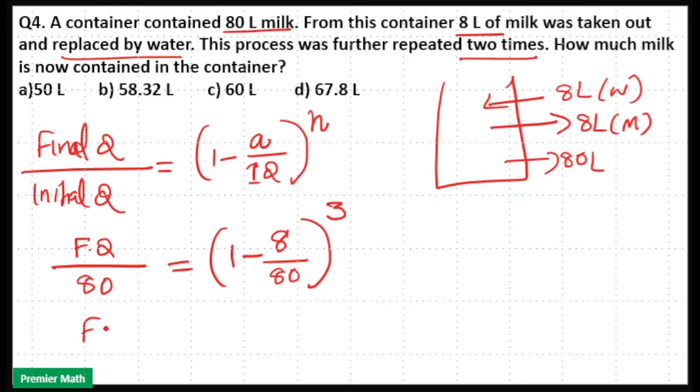Here final quantity will become 80 into 1 minus 8 by 80, which is equal to 80 minus 8 by 80, that is 72 by 80, whole cubed. That will become 80 into 9 cubed by 10 cubed, that is 729 divided by 1000.